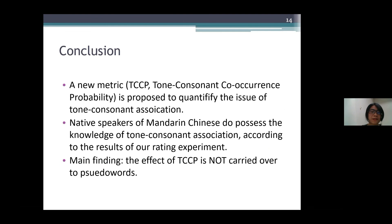To summarize, in this study, we proposed a new metric formulated as TCCP or tone-consonant co-occurrence probability to quantify the affinity of tone-consonant association. We found that native speakers of Mandarin Chinese do possess the knowledge of tone-consonant association, according to the results of our rating experiment. However, we also found that the effect of TCCP is not carried over to pseudowords.